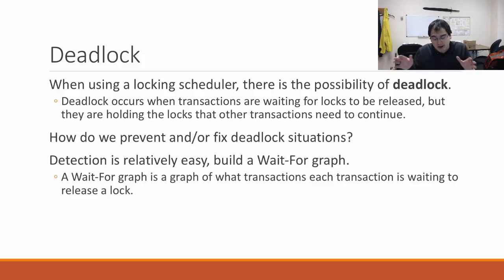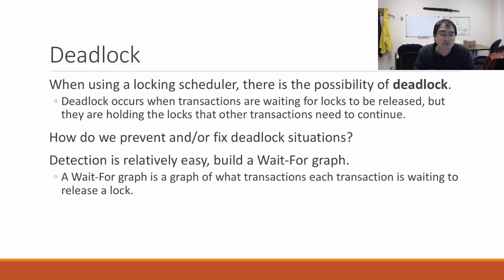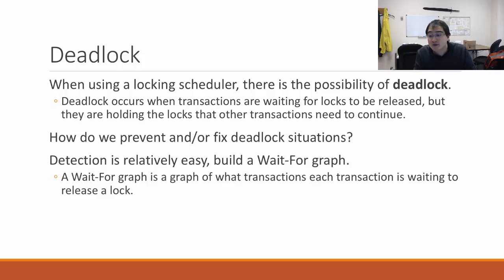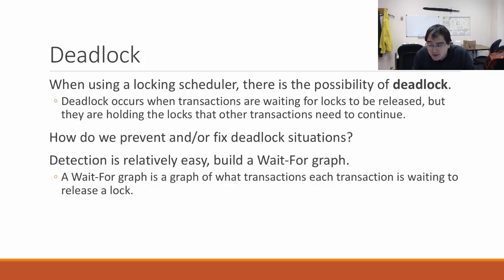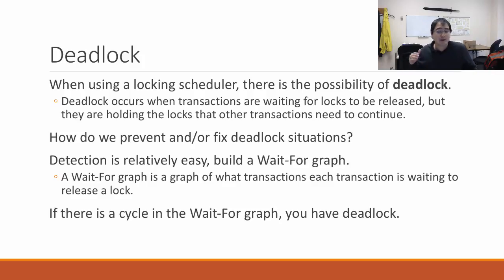The way you detect deadlock is to build what's called a wait-for graph. A wait-for graph maps which transactions are waiting for other transactions to release a lock. If transaction 1 is waiting for transaction 2 because transaction 2 holds a lock that transaction 1 needs, you draw an arrow from transaction 1 pointing at transaction 2. You recognize deadlock by looking for a cycle in the graph — a deadlock is a cycle in the wait-for graph.